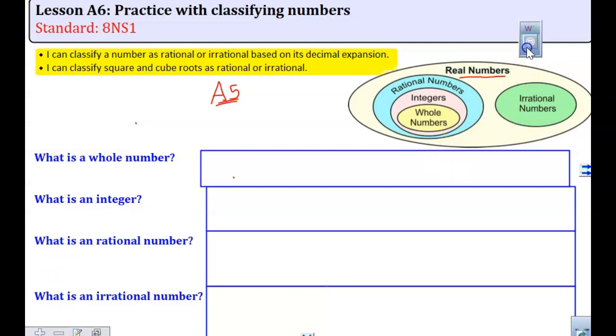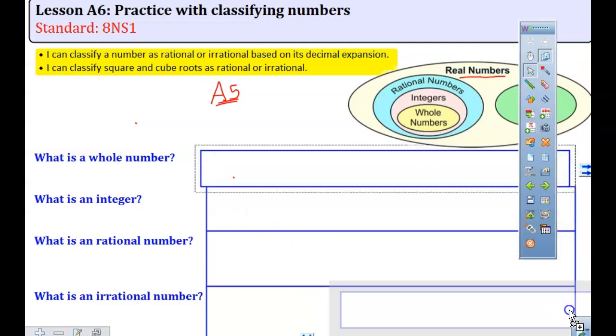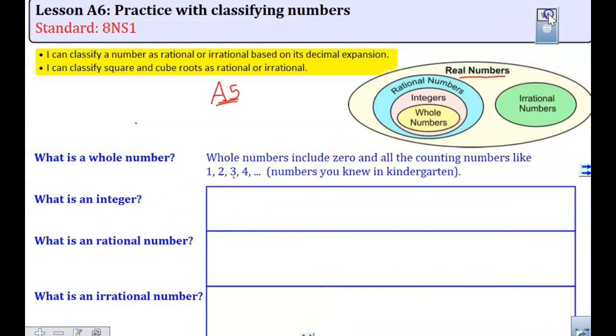The definitions that we talked about that I would like you to make sure you have written down. What is a whole number? A whole number includes zero and it's all of our counting numbers. So if we are thinking about it, whole numbers is 0, 1, 2, 3, 4, 5, like you learned in kindergarten.